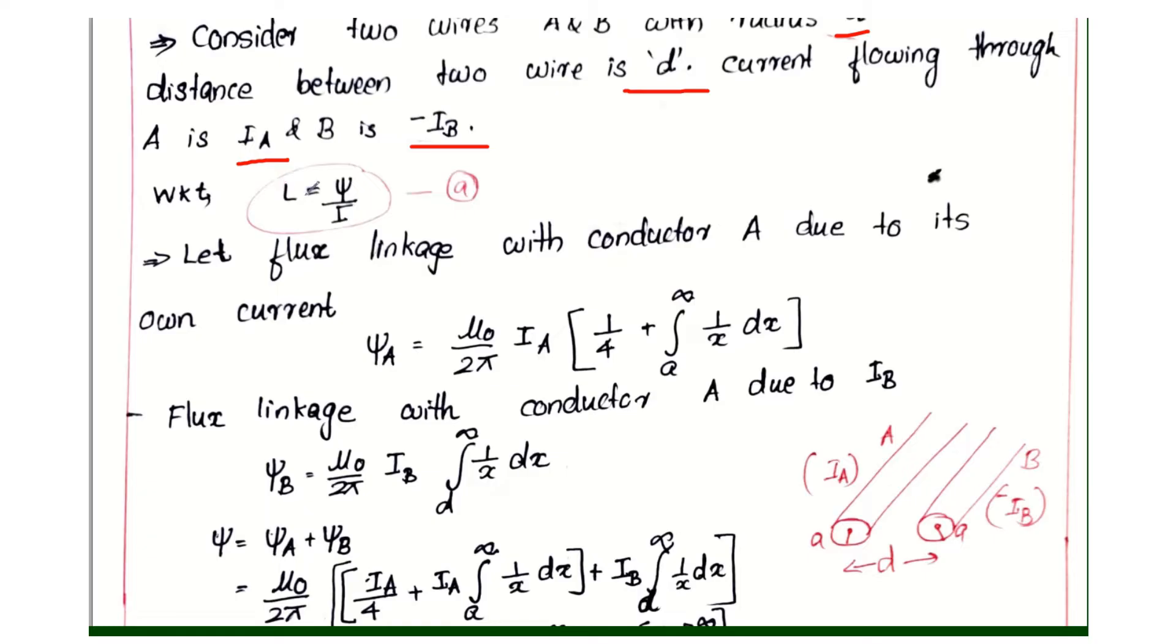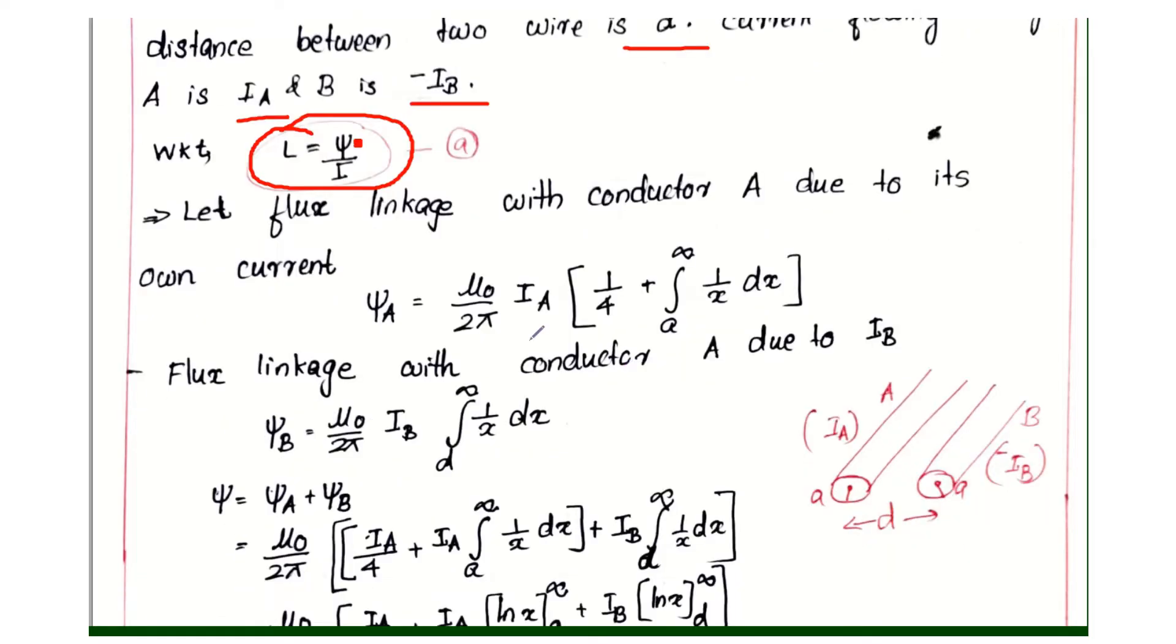Then we know that inductance L is equal to ψ by I. We will learn inductance L is equal to ψ by I. First, find ψ. We will consider the flux linkage.